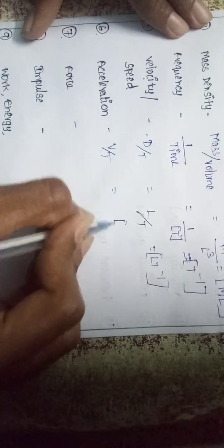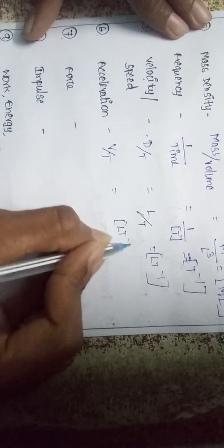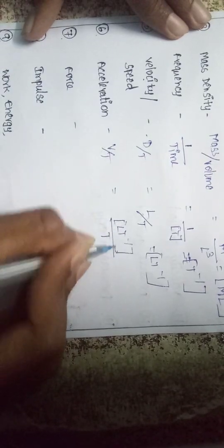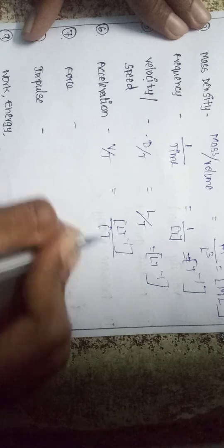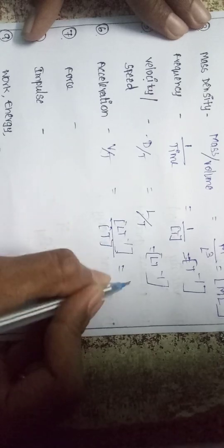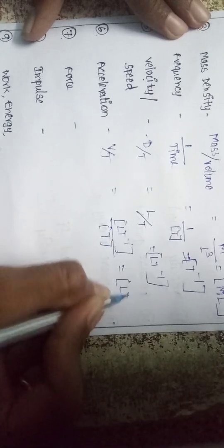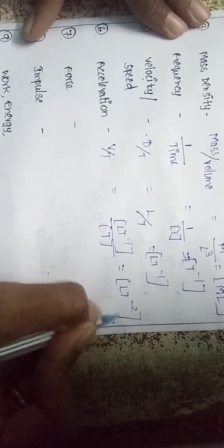For acceleration, it is velocity by time. Velocity is L T⁻¹, divided by T, so acceleration is L T⁻².